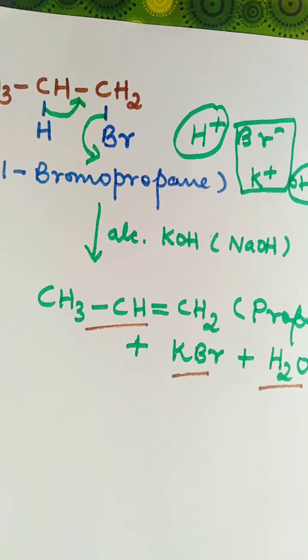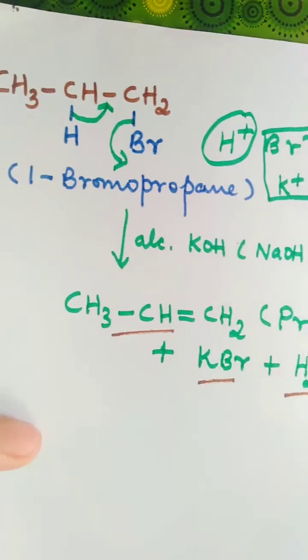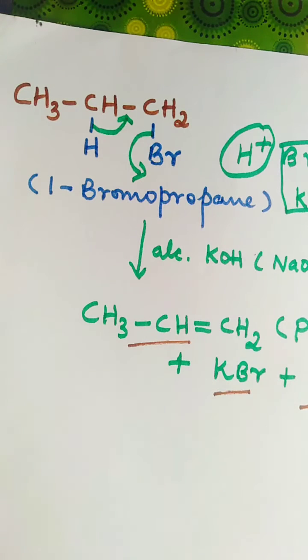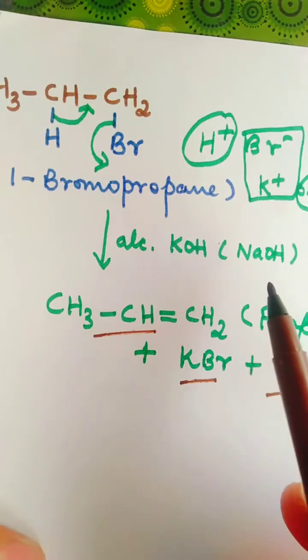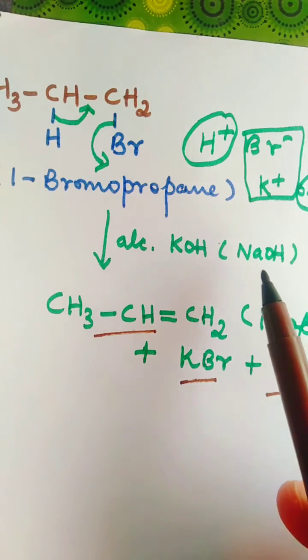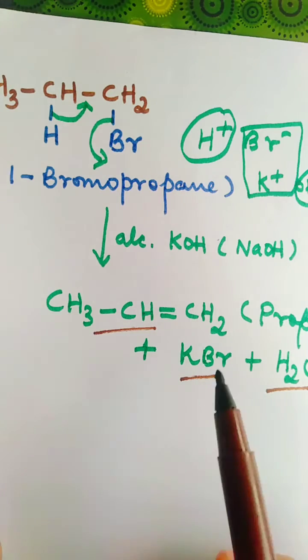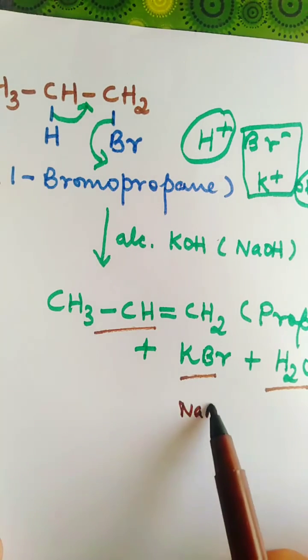This is how you predict the product when 1-bromopropane is treated with alcoholic potassium hydroxide or sodium hydroxide. If you are using sodium hydroxide, then in place of K, we have NaBr.